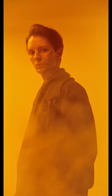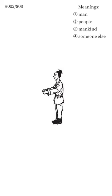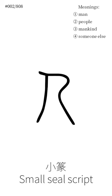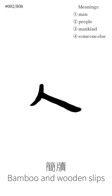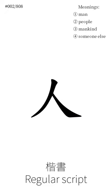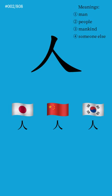Perhaps this is why the image of a man standing eventually comes to represent mankind itself in Chinese, Japanese and Korean. The human figure is most obvious in the ancient Oracle Bone script. The character gradually becomes more stylized until we get to the regular script still used today.